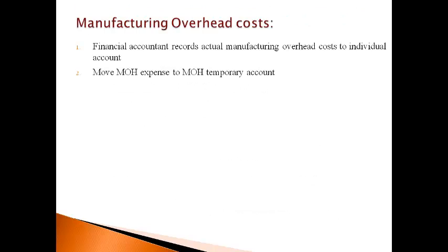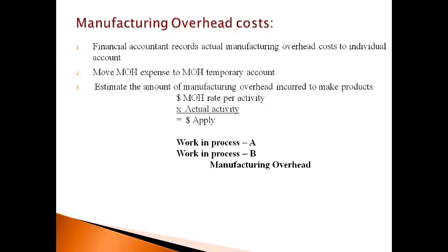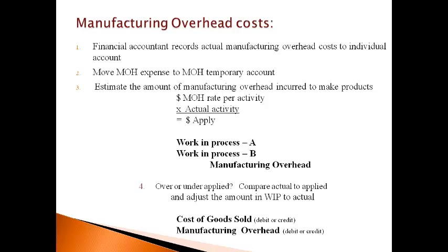To summarize, manufacturing overhead takes four entries to record. First, the financial accountant records actual manufacturing overhead to the individual accounts, such as rent expense, manager salary, utilities expense, etc. Second, all manufacturing overhead expenses are moved to a temporary holding account. Third, the estimated cost to make all products is moved to the work in process accounts using the estimated cost and the actual quantity of activity. Fourth, the estimated amount moved to work in process is adjusted to equal the actual amount incurred during the period. The cost of goods sold account is used when the company has a work in process account for each product and the actual amount required to make each product cannot be known. Either account in this entry can be a debit or a credit.